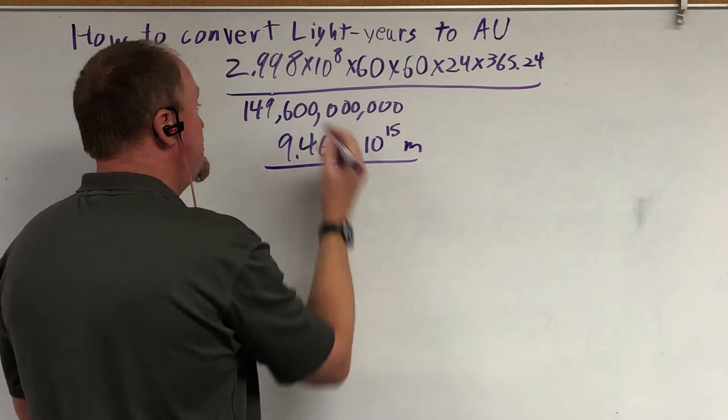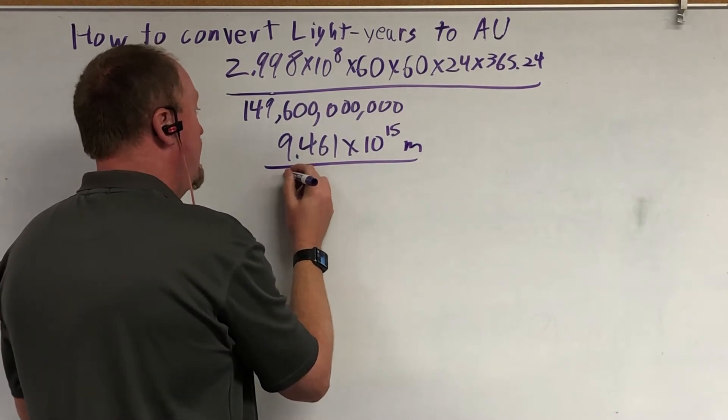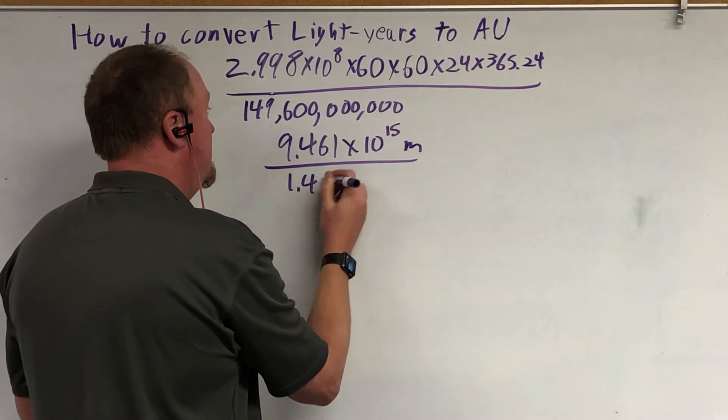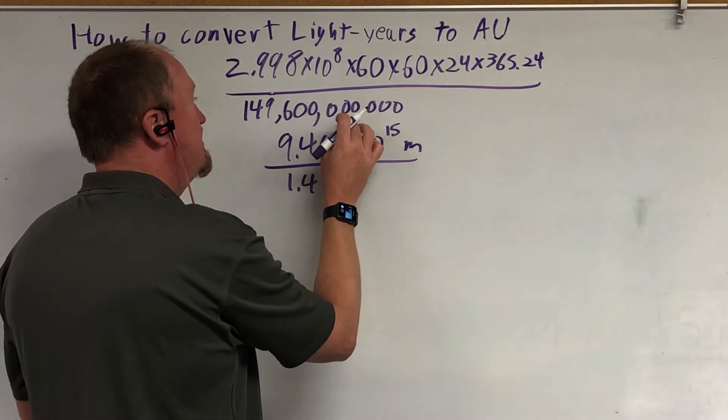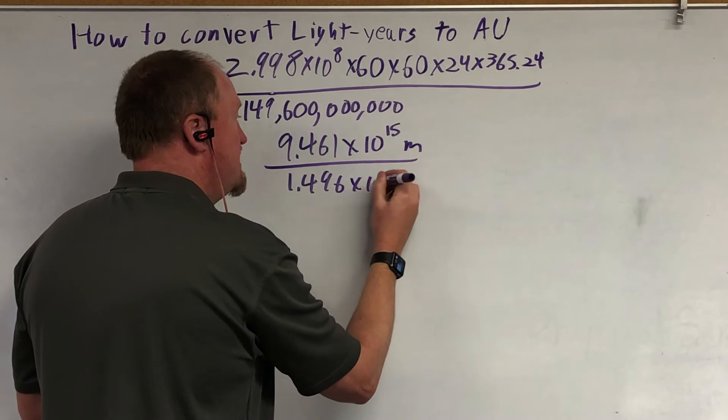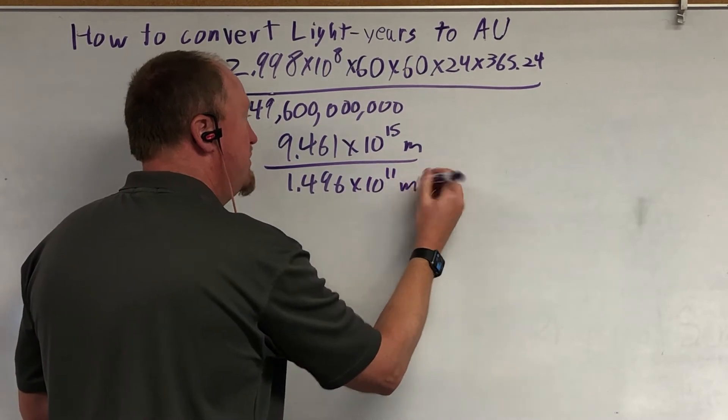And the AU, let's just put in scientific notation, 1.496 times 10 to the 11th meters.